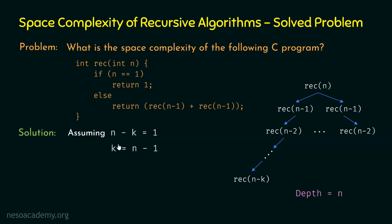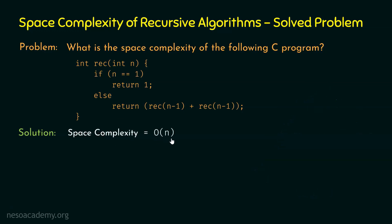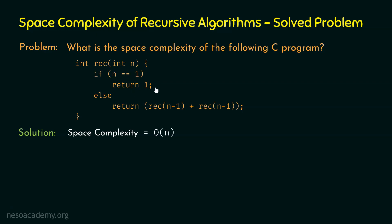Hence, the space complexity of this program is O(n). This is the worst case space complexity. For the best case, if the base case is satisfied for the first function call, then it is omega of 1. So best case is Ω(1) and worst case is O(n). In this program, we call two functions, and finding the depth of recursion gives us the space complexity.